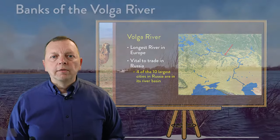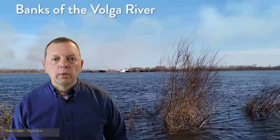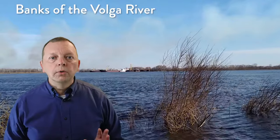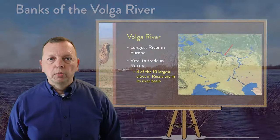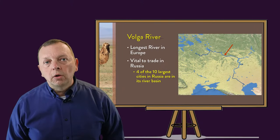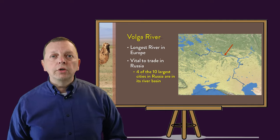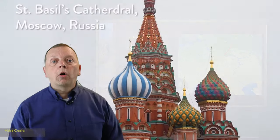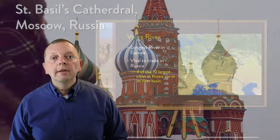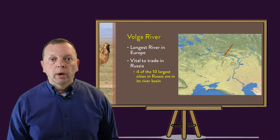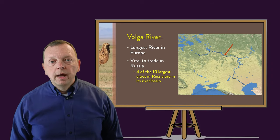Flowing through Russia's North European Plain, we also find the Volga River. Not only is the Volga the longest river in Europe, it is also the most important river to Russia. Four of the ten largest cities in Russia, including the capital Moscow, are in the Volga's river basin, making the Volga incredibly vital to Russia's trade.